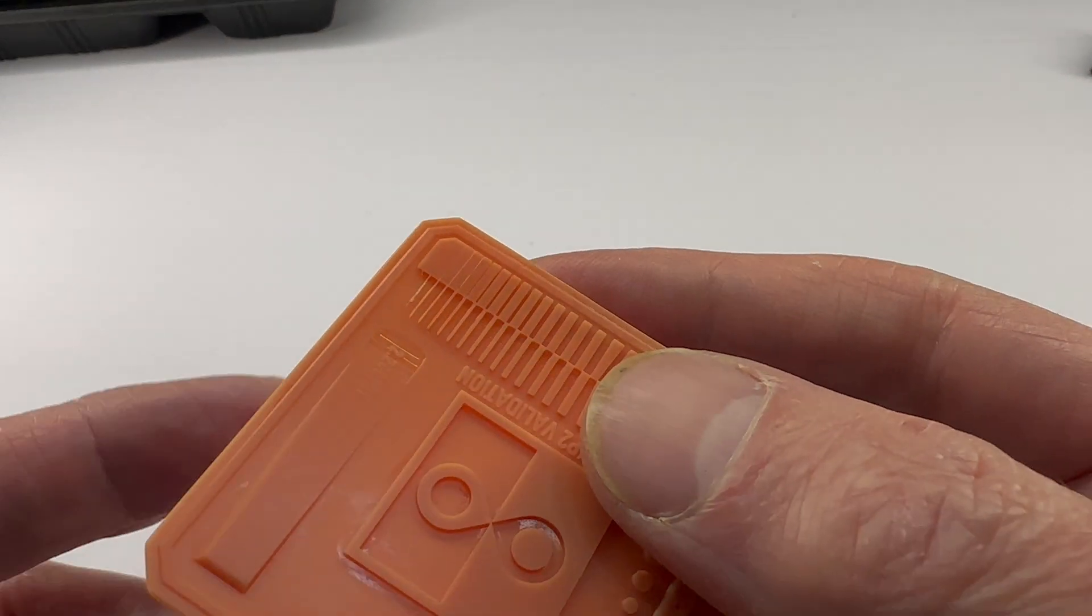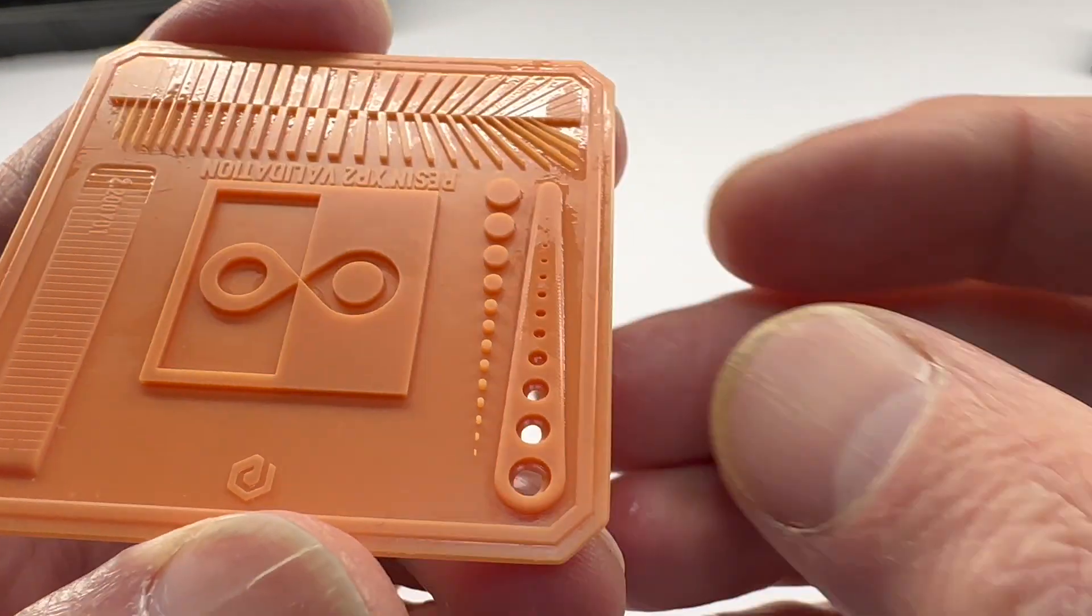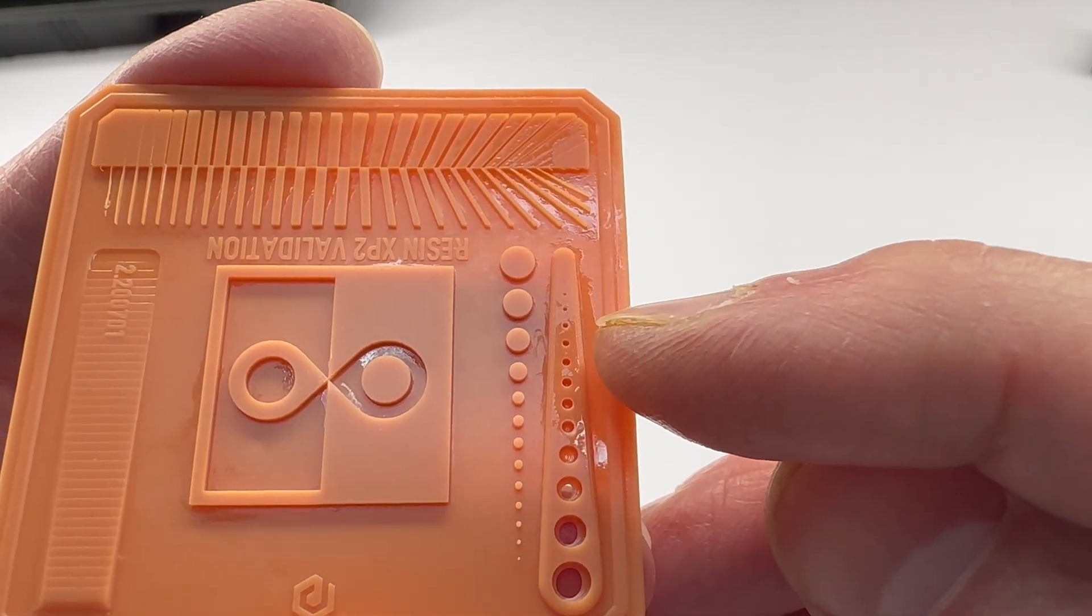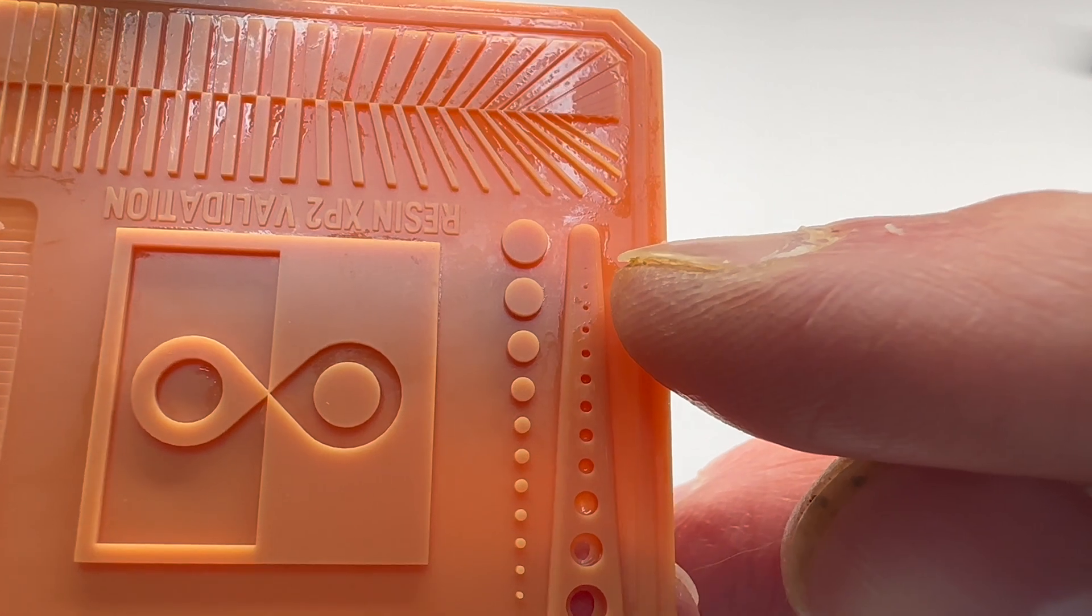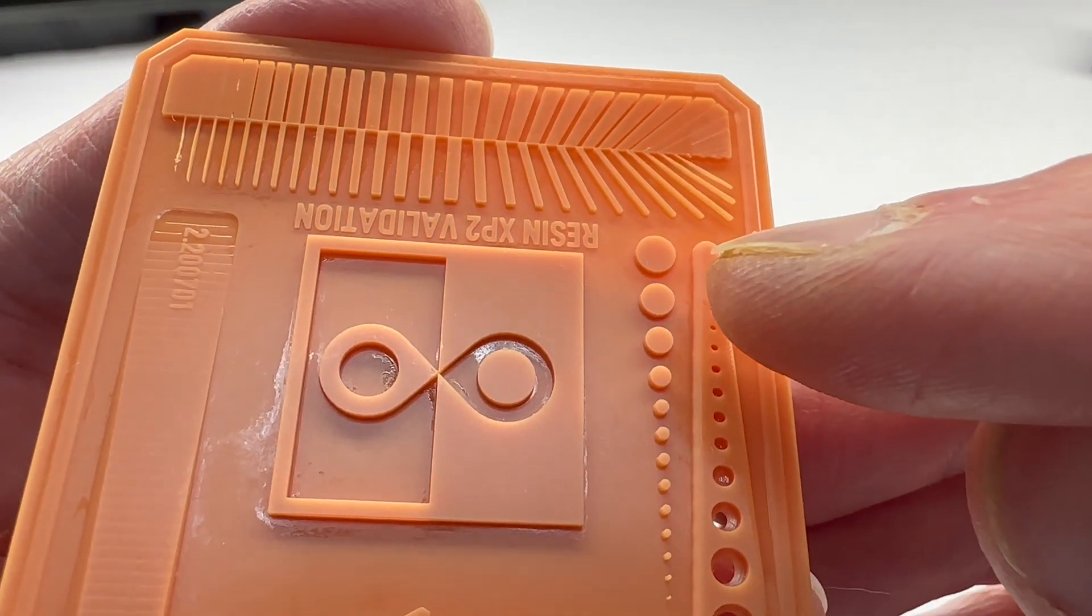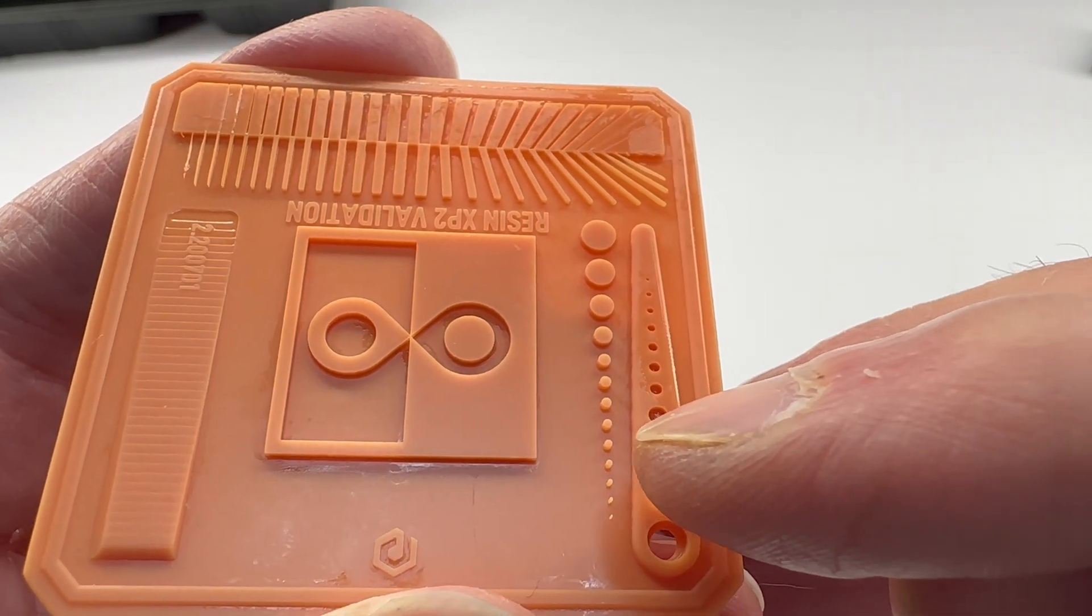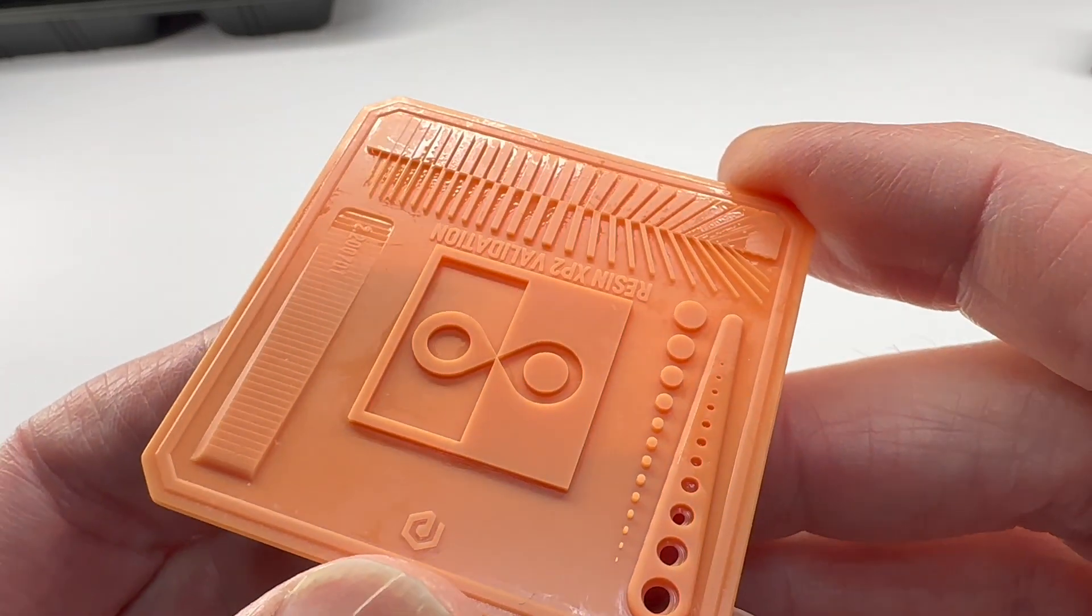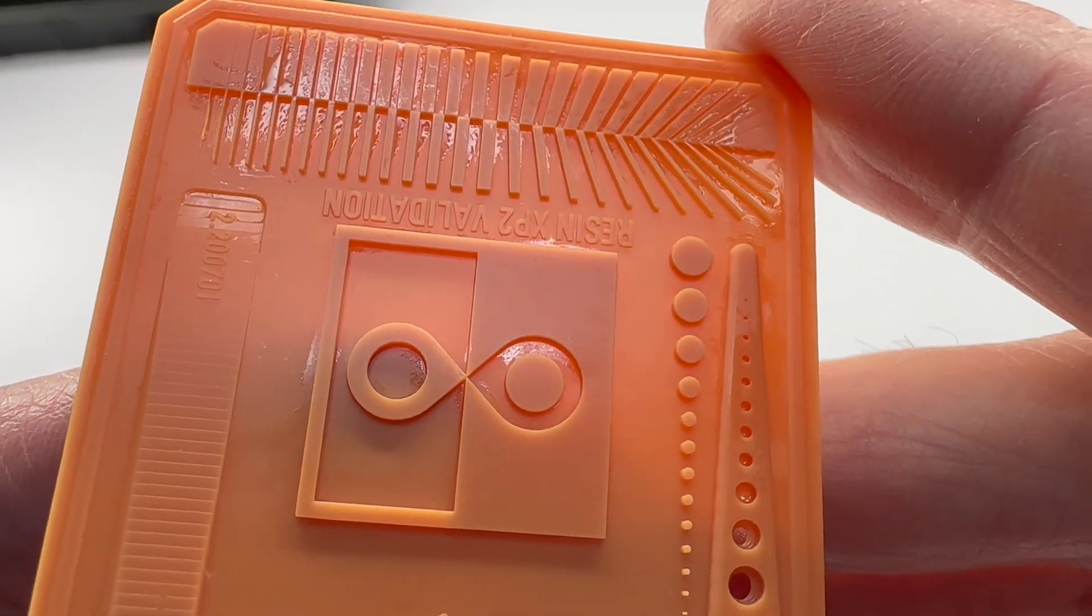And then lastly is this one. So we have 1, 2, 3, 4, 5, 6, 7, 8, 9, 10, 11, 12, 13 holes. 1, 2, 3, 4, 5, 6, 7, 8, 9, 10, 11, 12, 13 posts. Yeah, that's pretty good.